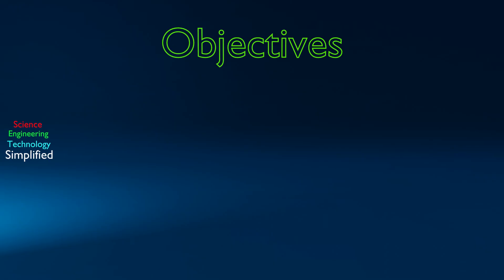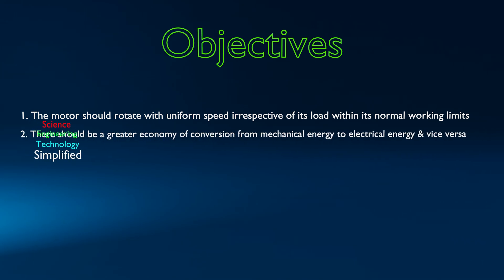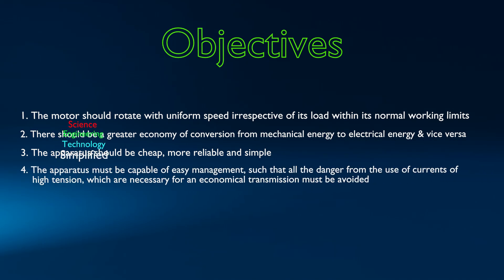Nikola Tesla invented this electromagnetic motor to achieve the following objectives. The motor should rotate with uniform speed, irrespective of its load within its normal working limits. There should be a greater economy of conversion from mechanical energy to electrical energy, and vice versa. The apparatus should be cheap, more reliable, and simple. The apparatus must be capable of easy management, such that all the danger from the use of currents of high tension, which are necessary for an economical transmission, must be avoided.